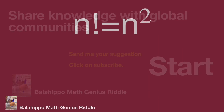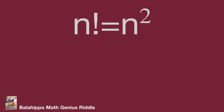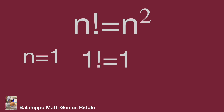The simple question is n factorial equal to n squared. We may guess: if n equal to 1, then n factorial equal to 1 factorial equal to 1, and n squared equal to 1. So n equal to 1 — that's the answer.